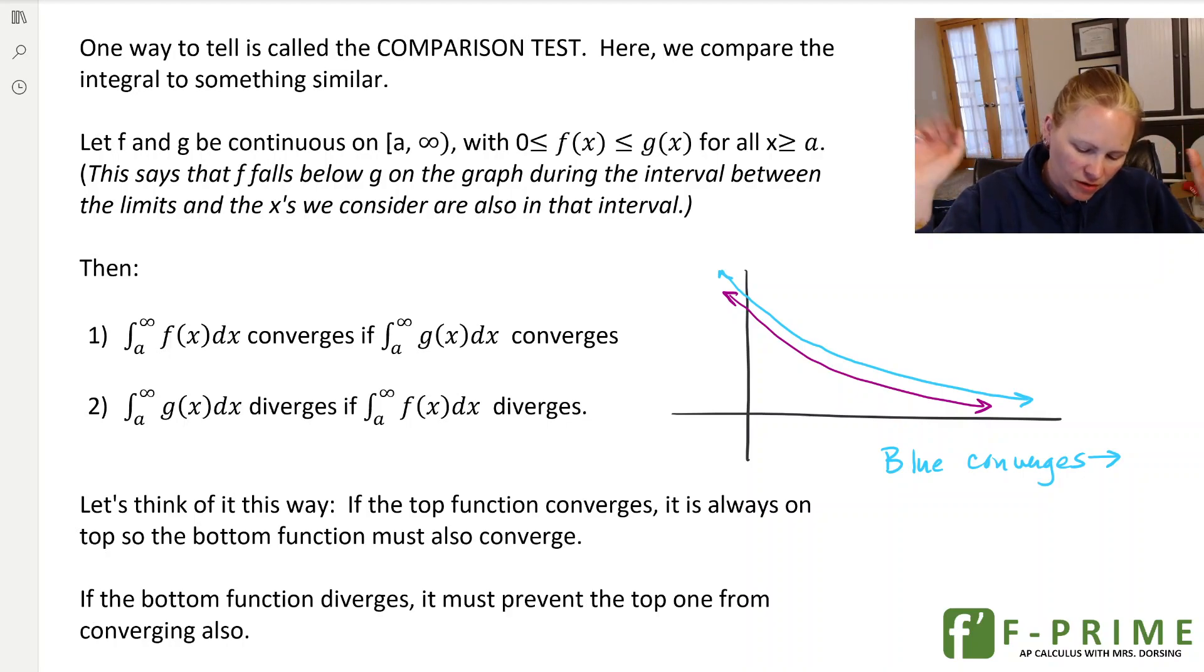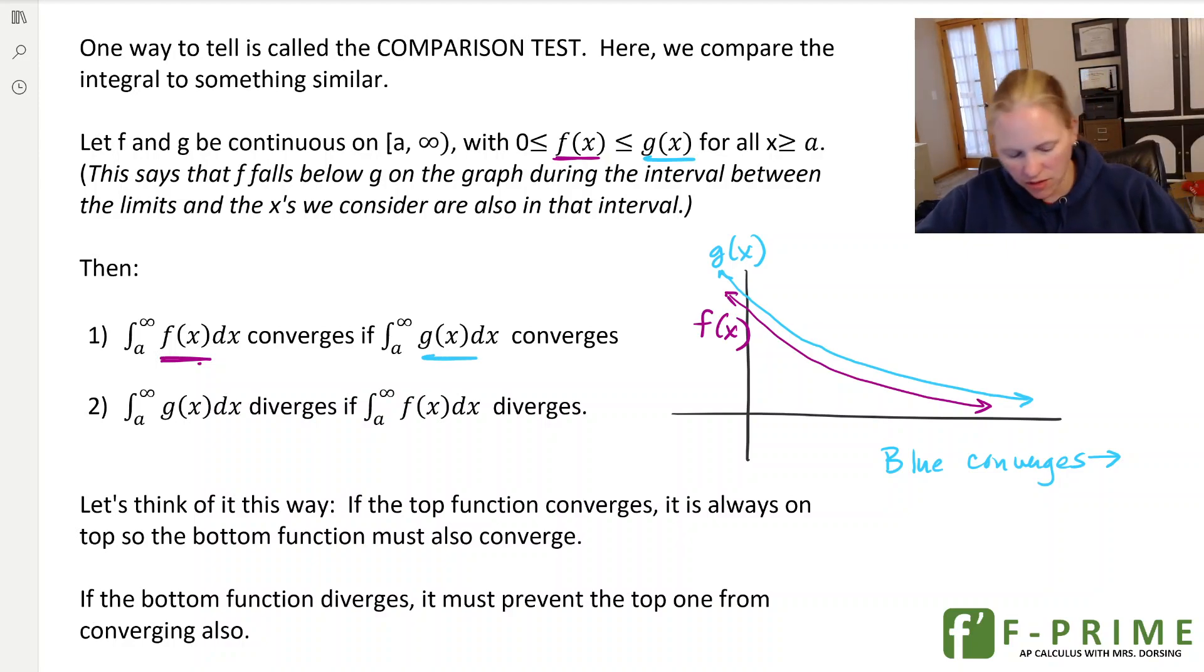If the integral of f(x) converges, then g(x) converges. So we call this one f, that's the blue one. So notice, oops, I had these backwards. Let's go ahead and switch that around. f is the purple one, so f is between, it's sandwiched. So f is on the bottom, g is on the top. So g(x) is the blue one.